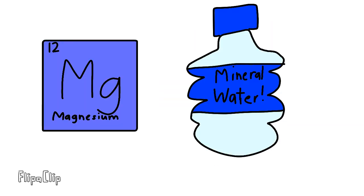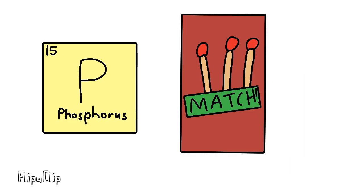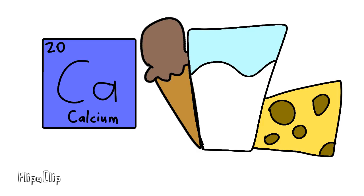Neon to light up the sign, sodium for salty times, magnesium, aluminum, silicon, phosphorus, then sulfur, chlorine, then argon, potassium, and calcium so you'll grow strong.